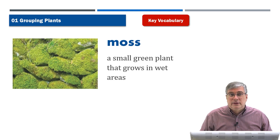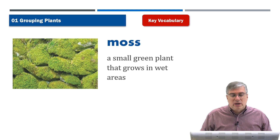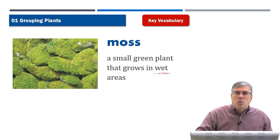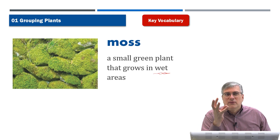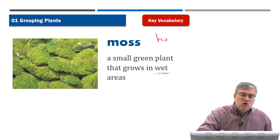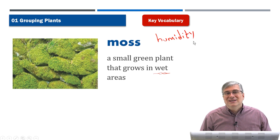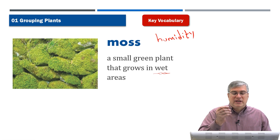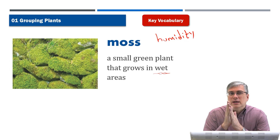Next we have 'moss.' Moss grows on rocks usually, but it could also grow on buildings or concrete. It's a small green plant that grows in wet areas. Moss needs water — and usually a lot of water in the air — to grow. Water in the air we call humidity. If there's a lot of humidity in the climate, there's a good chance that moss will grow on rocks.